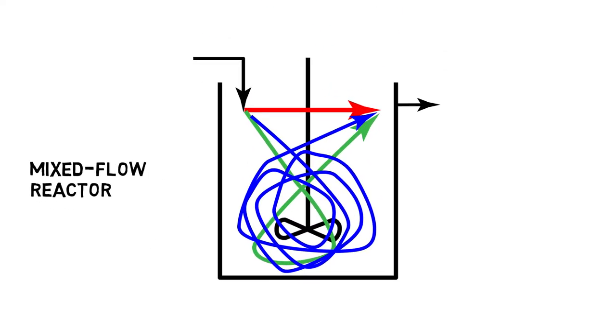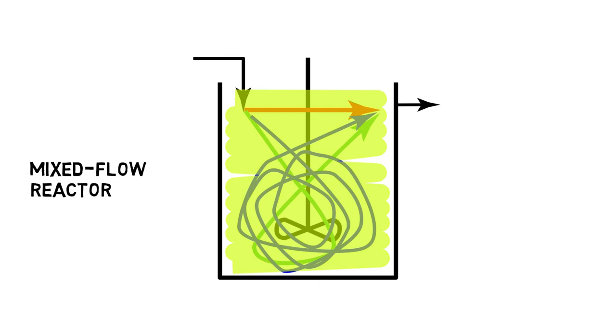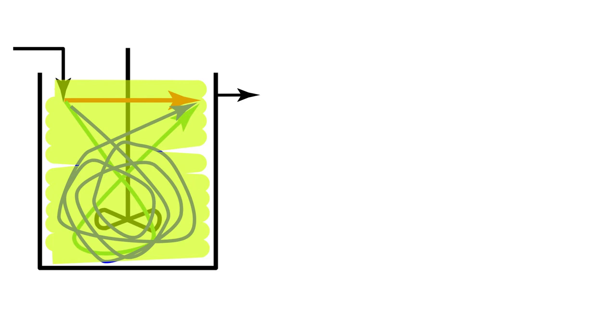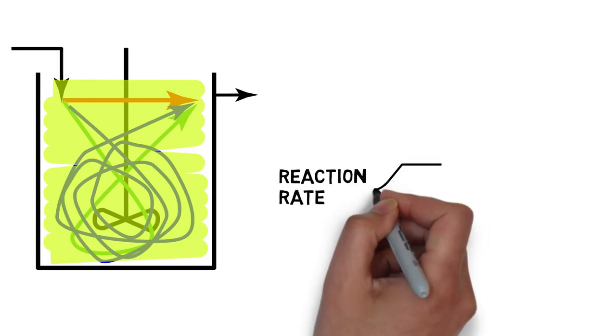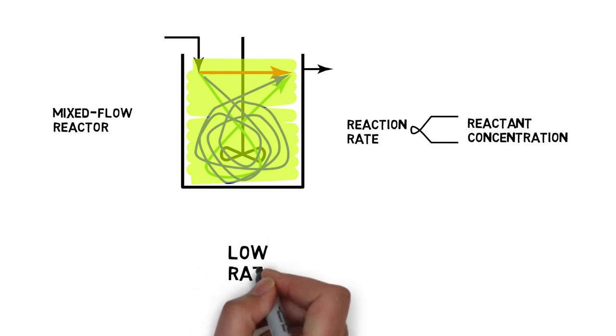Let's return to the industrial scale stirred tank reactor. Another problem is that the concentration of the reactant is uniform throughout the reactor since the reactor is stirred continuously, and this concentration is low because it corresponds to the concentration at the outlet of the reactor. However, the reaction rate is usually proportional to the reactant concentration. Hence, in a stirred tank reactor, the reaction rate is low throughout the entire volume of the reactor and this results in a low production of the molecule of interest.